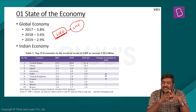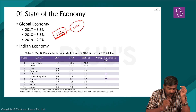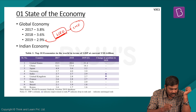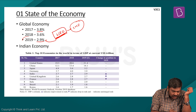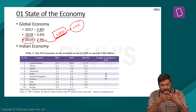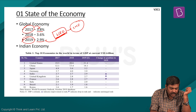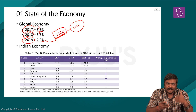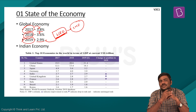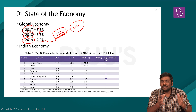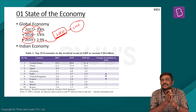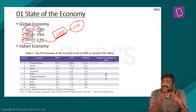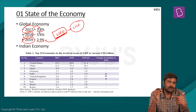This report notes that the global economy grew by 2.9% for the year 2019. For 2017, the growth rate was 3.8%, and for 2018 it declined to 3.6%. So there is a slowdown in the international market. Two key questions arise: what are the reasons, and what is the impact on India?